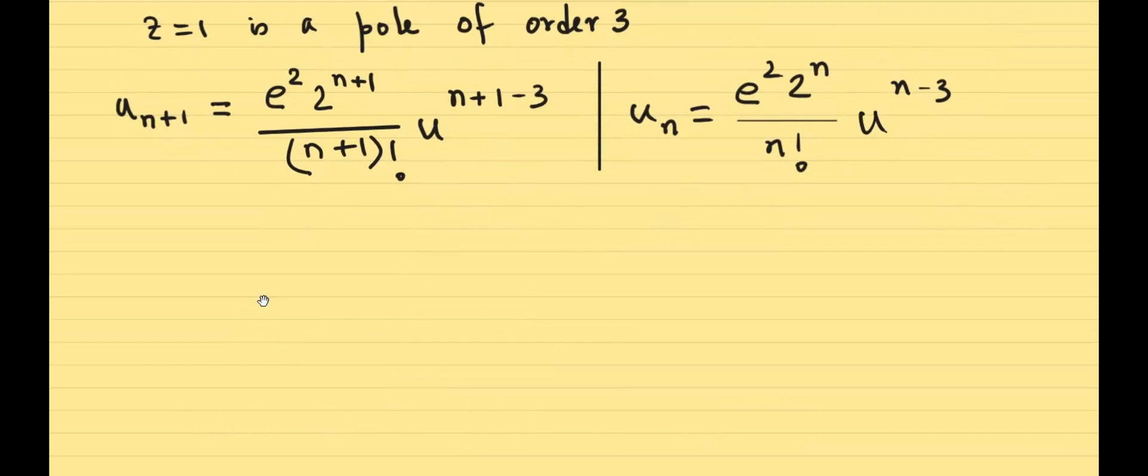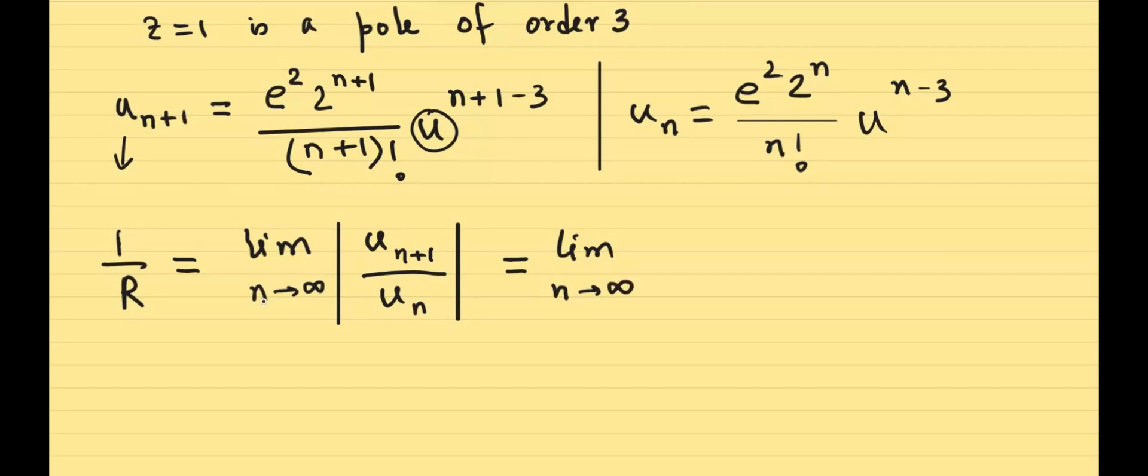This series has a radius of convergence, so let us find it out. So here we have the two terms. One is u of n plus 1, so that's the n plus 1 term. By the way, I think there is going to be a misunderstanding. This u is defining which term it is. This u and this u here, they're not the same. Perhaps I should have used a different kind of symbol. So from the next problem I will, but let's get along with this one. So we have 1 over r equals limit n tends to infinity, we have u of n plus 1 and then u of n with a modulus.